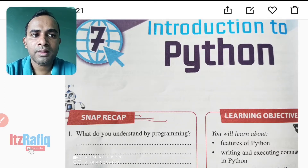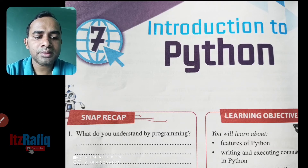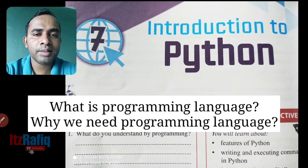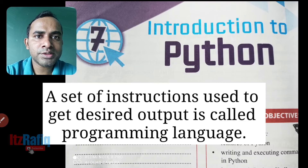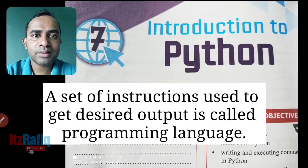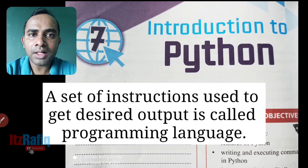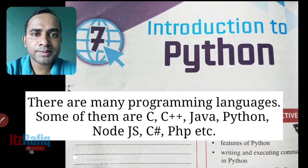We are going to start a new chapter today on Python. Before we proceed, you have to know about a few things like programming languages and why we need them. Programming languages are a set of syntax and rules through which we can instruct our computer to do any work or tasks. As we know, computers understand only machine language and we understand human language, so we have to instruct the computer in a machine language using a programming language.